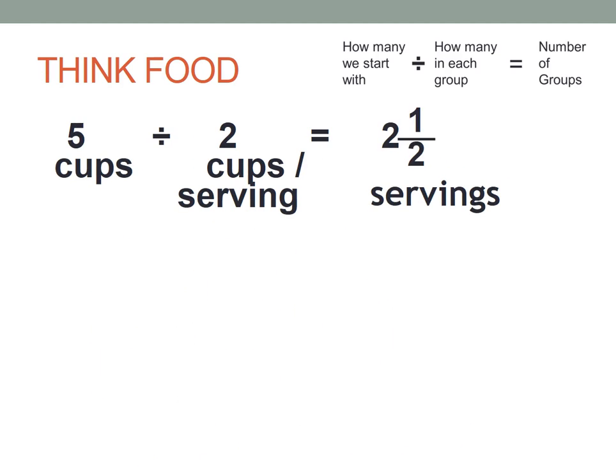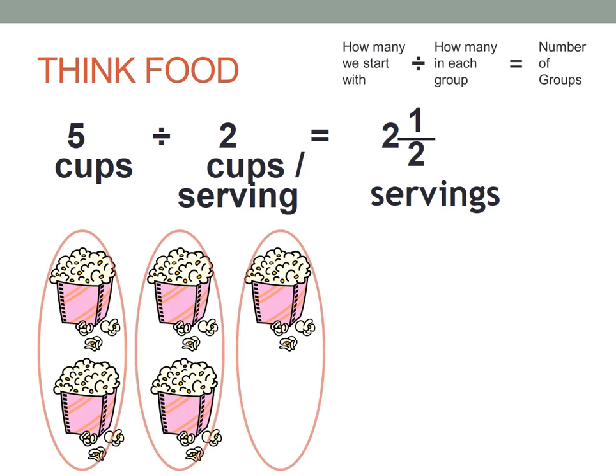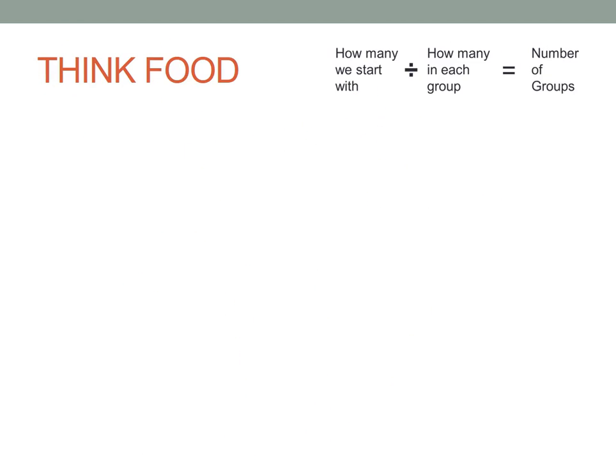Let's take a look at this. We've got 5 cups, and they're 2 cups per serving. So here I've got 5 cups of popcorn, I'm going to break them into the same 2 groups, but check this out, I don't have a full group here. I've got 1 group here, 2 groups here, I've got a half a group here, so my answer is 2 and a half. 5 divided by 2 is 2 and a half, so that's what it visually looks like.